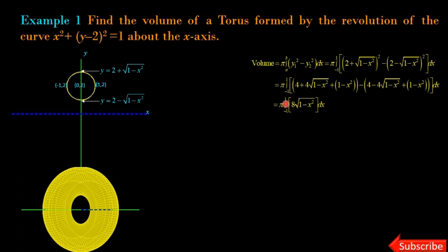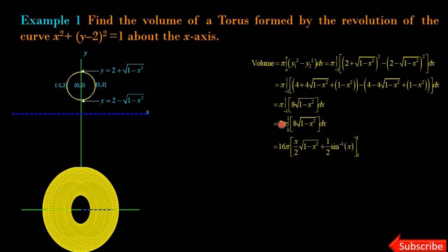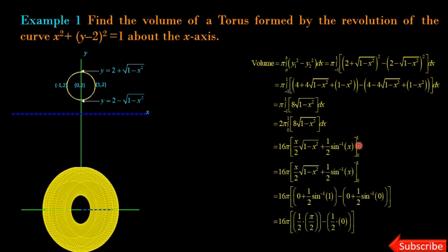The limits of integration are −1 to 1, which is a symmetrical limit, and √(1 − x²) is an even function. Using the integration property, we rewrite this as 2π times the integral from 0 to 1 of 8√(1 − x²) dx, giving 16π. The standard integral of √(1 − x²) is (x/2)√(1 − x²) + (1/2) sin⁻¹(x), evaluated between 0 and 1.